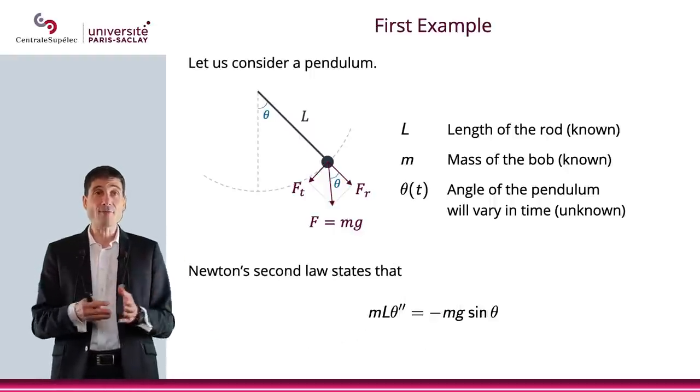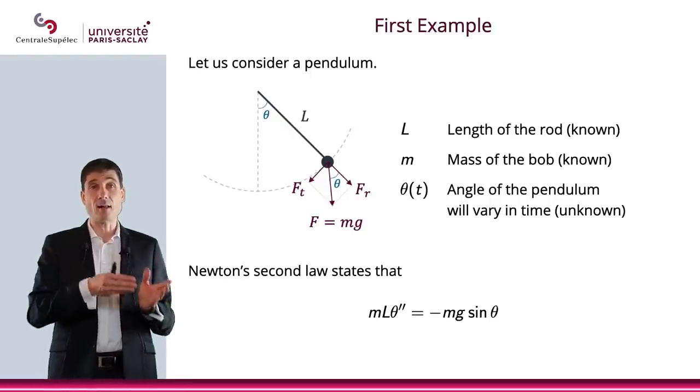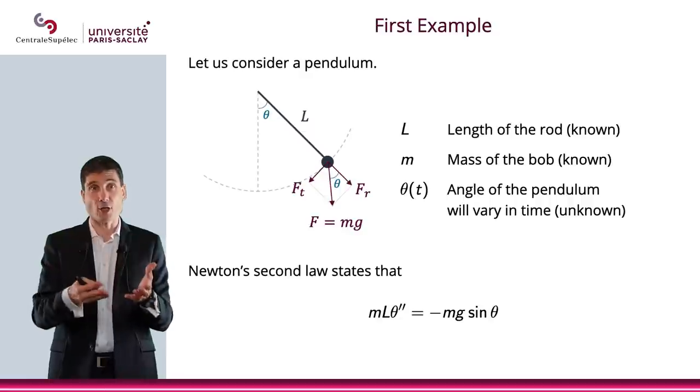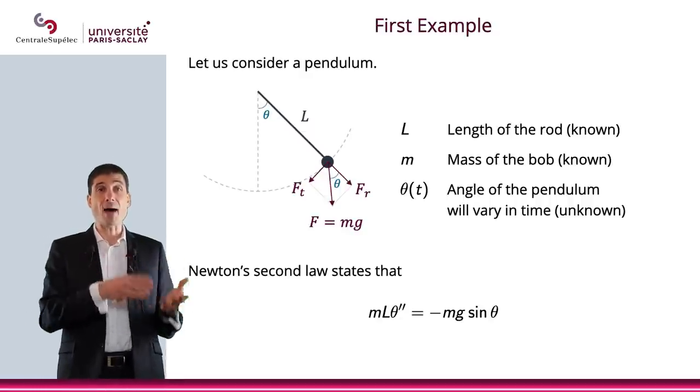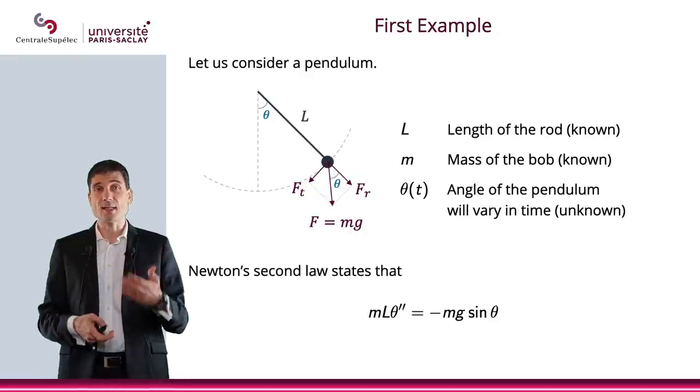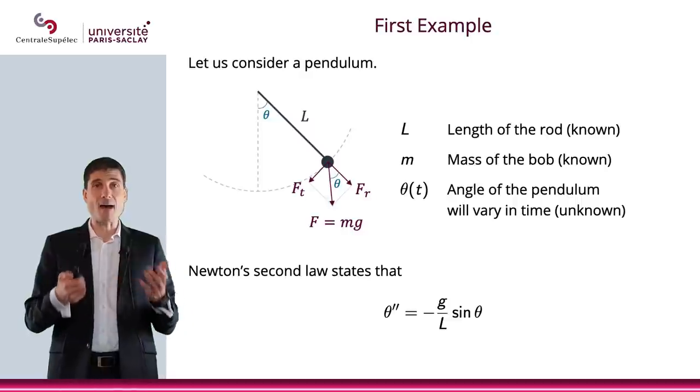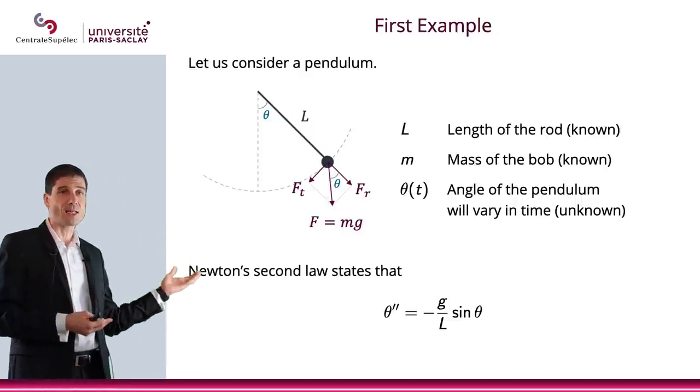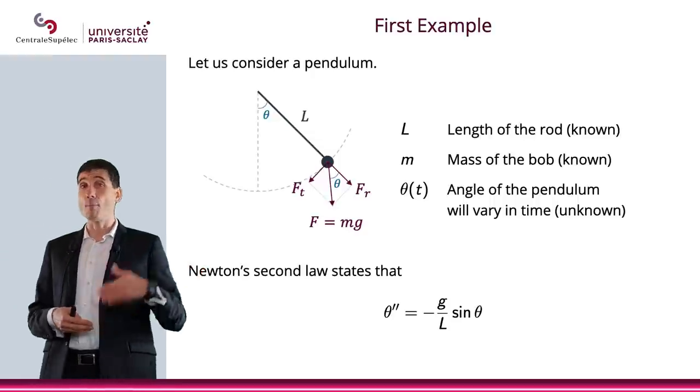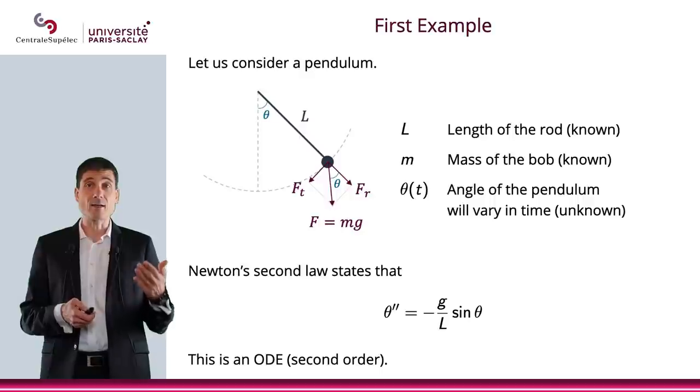So what we will have is, thanks to Newton's second law, that mLθ'', which is the acceleration, will be, m times the acceleration, is -mg sin θ. And since the bob has a mass which is not zero, then we can simplify by m and obtain that θ'' is equal to -(g/L) times sin θ.